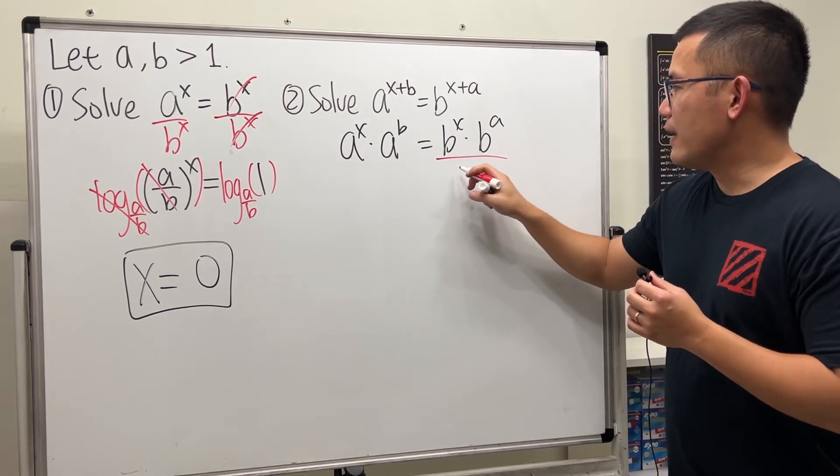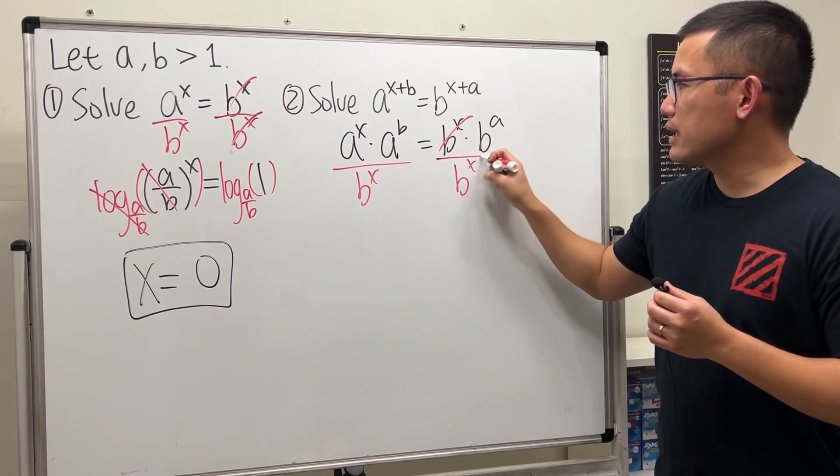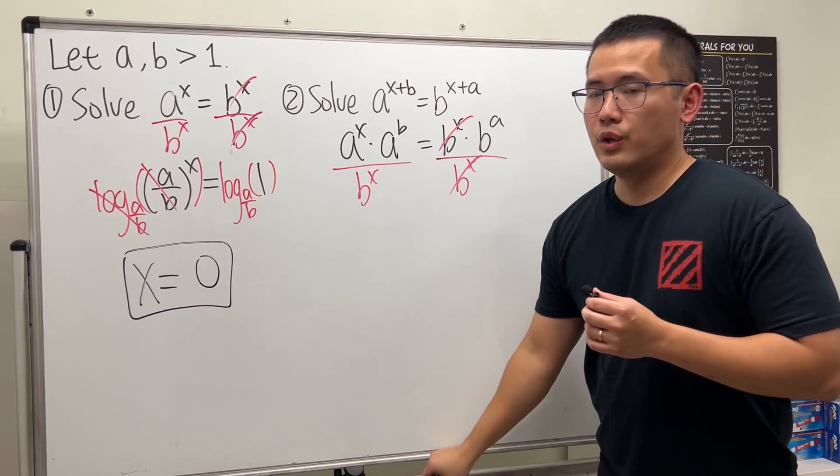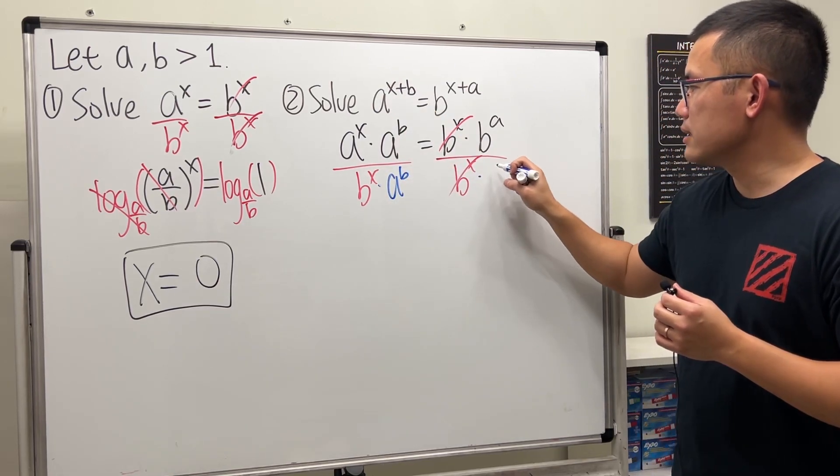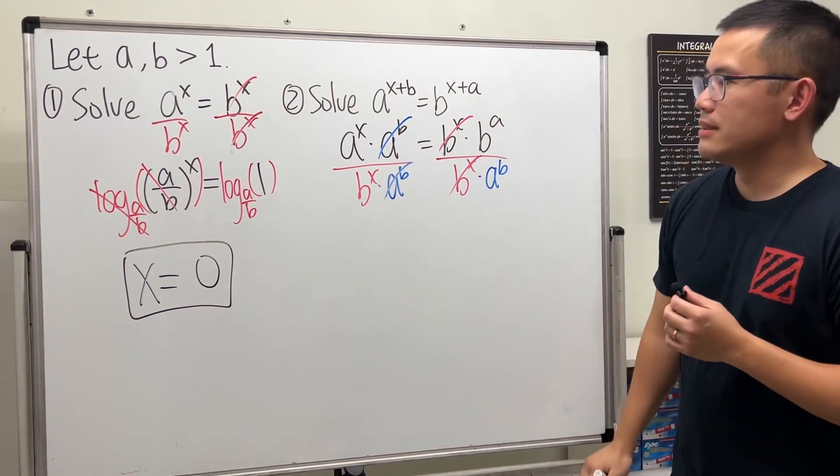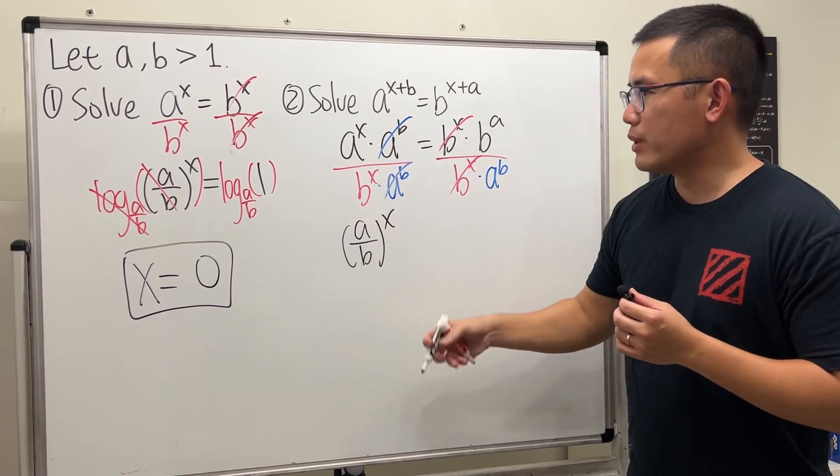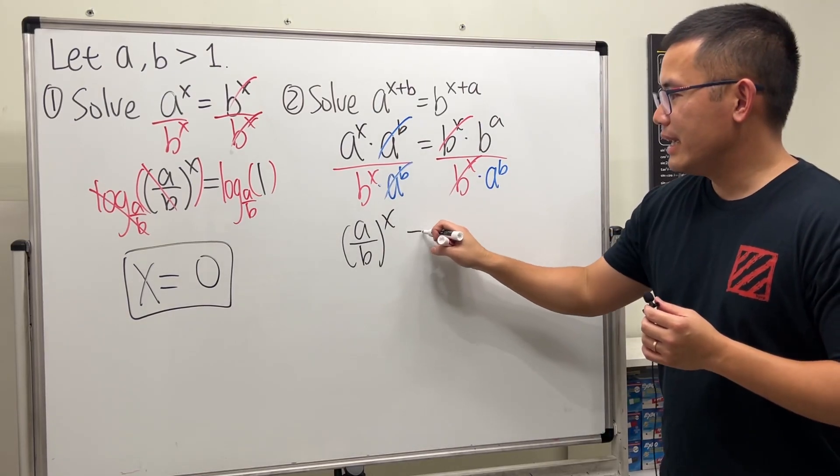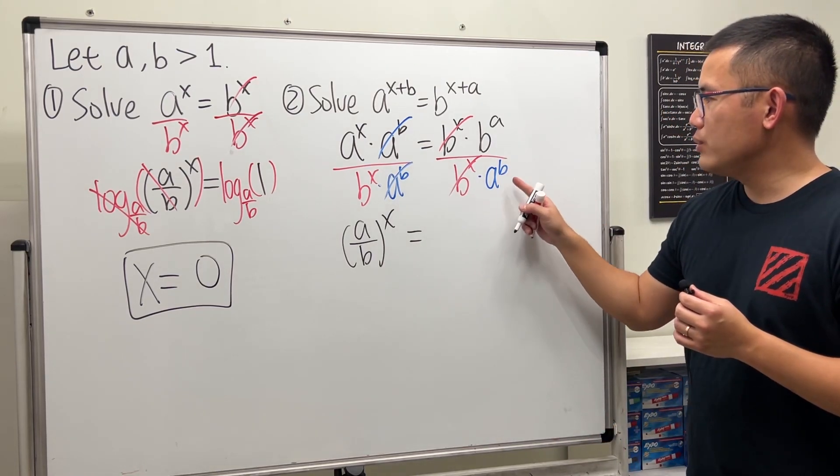Let's do the same thing like what we did over there. Let's divide b^x on both sides so that this and that cancel. We have a^x on the left hand side, so we should put this to the other side. We can divide a^b on both sides so that this and that cancel. Now this part we get (a/b)^x similar to that.